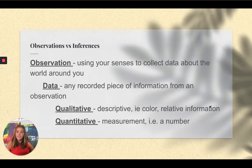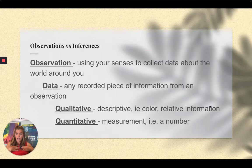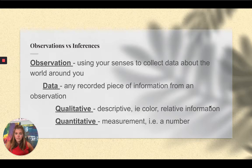There's different types of data. We label them as different things. There's qualitative data, which is descriptive, like color or relative information. My shirt is red would be qualitative. My pants are black, that's qualitative. The wall behind me is blue, qualitative.